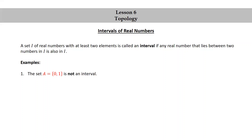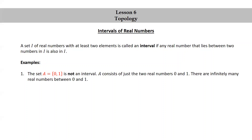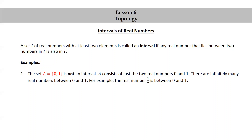Let's look at some examples. The set A, consisting of the real numbers 0 and 1, is not an interval. A consists of just the two real numbers 0 and 1. There are infinitely many real numbers between 0 and 1 — for example, the real number 1/2 is between 0 and 1.